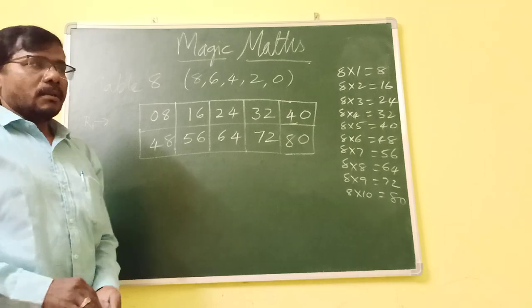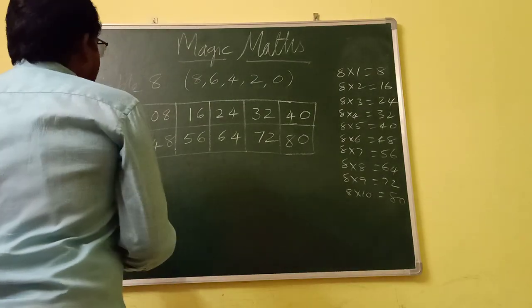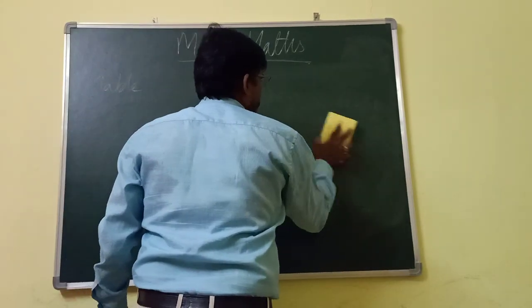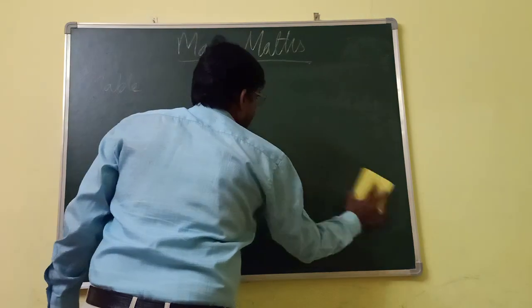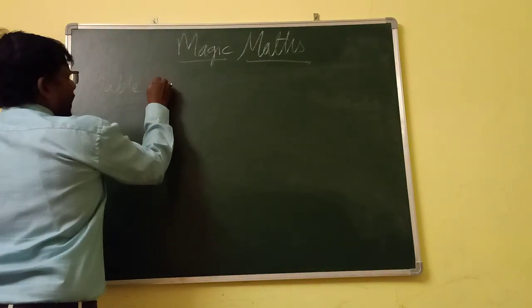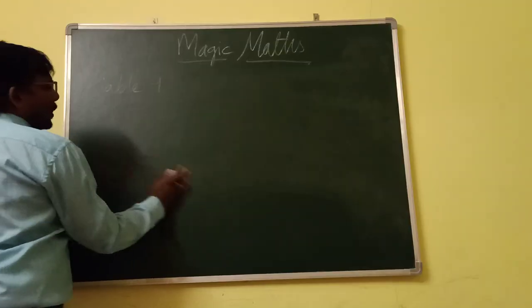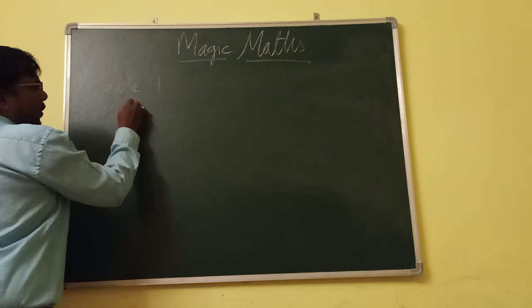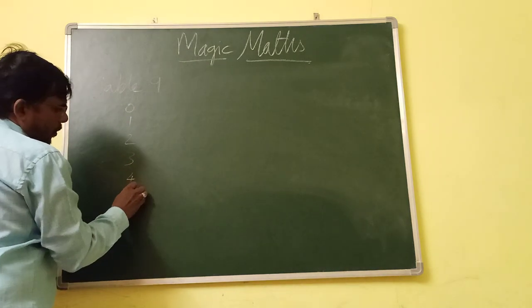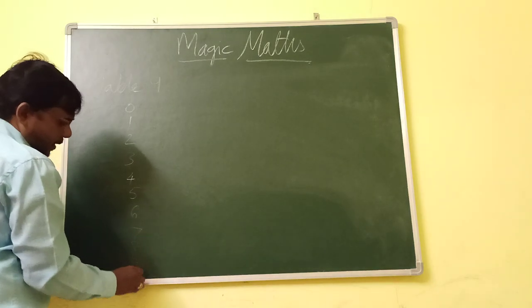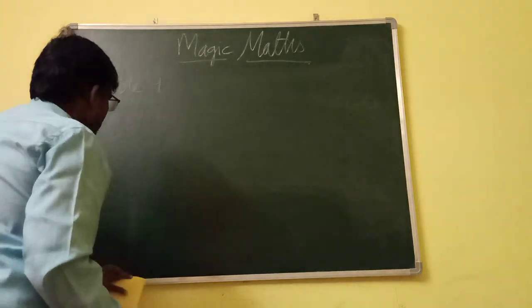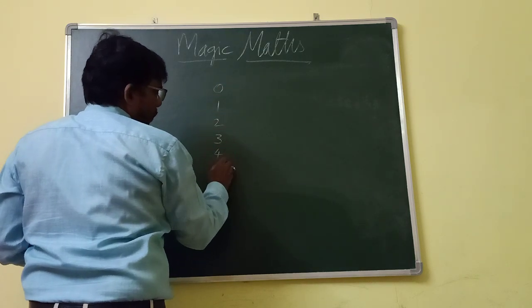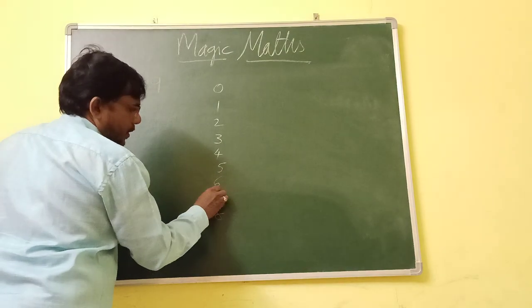I think you understood. Now let us see today's last table, that is table 9. It's very easy, I think everyone knows this table. First, I think everyone knows, the numbers we need to write from 0, 1, 2, 3, 4, 5, 6, 7, 8, 9.